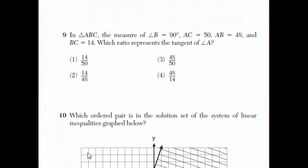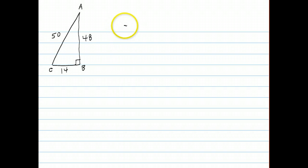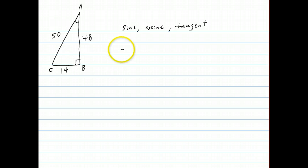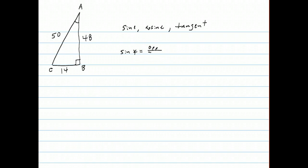Now, question 9 is the first question that utilizes some trigonometry. It says you have triangle ABC, you have a right angle at B, AC is a line segment of length 50, AB is length 48, and BC is length 14, and they'd like to know what ratio represents the tangent of angle A. There are three trigonometric ratios known as sine, cosine, and tangent. The sine of an angle in a right triangle is equal to the length of the opposite side divided by the length of the hypotenuse.